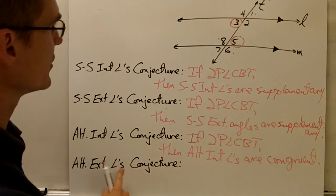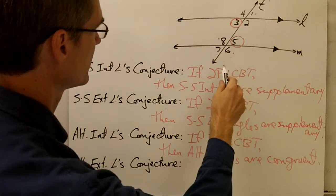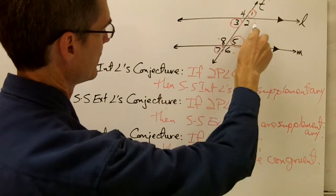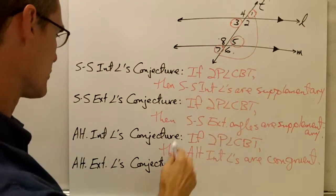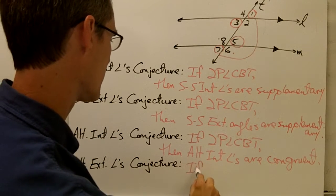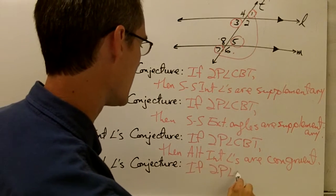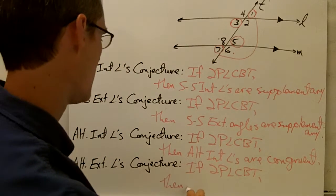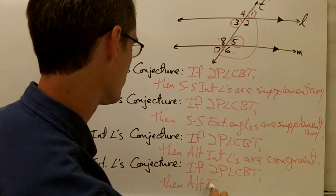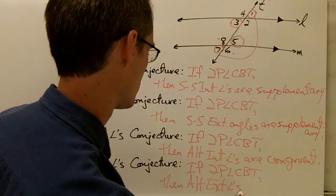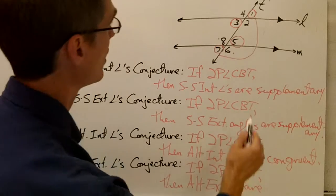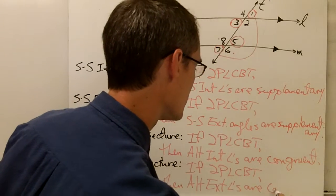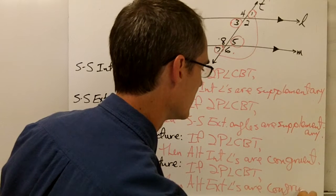And finally, the alternate exterior angles conjecture. Alternate exterior angles — how about angle 1 and angle 7? Angles 1 and 7 are alternate exterior angles. If two parallel lines are cut by a transversal, then alternate exterior angles are congruent. Both appear to be acute angles, so I'm going to say these angles are congruent.